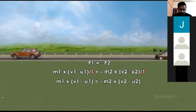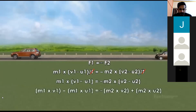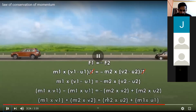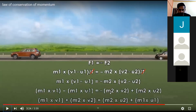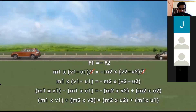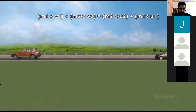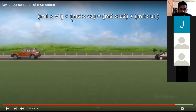The equation can then be simplified: M1·V1 − M1·U1 = −M2·V2 + M2·U2. Rearranging so that the final velocities V1 and V2 are on one side and initial velocities U1, U2 on the other: M1·V1 + M2·V2 = M2·U2 + M1·U1. Here M1·U1 and M2·U2 represent the momentum before collision, and M1·V1 and M2·V2 represent momentum after collision.